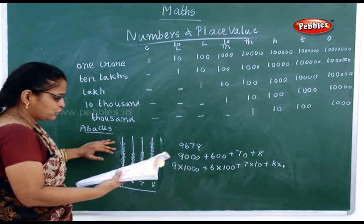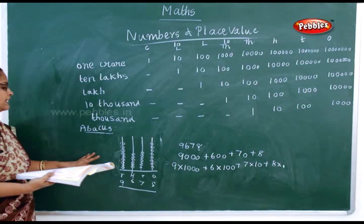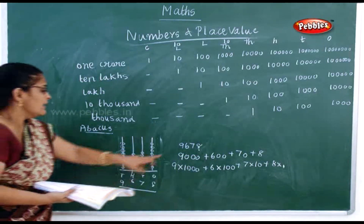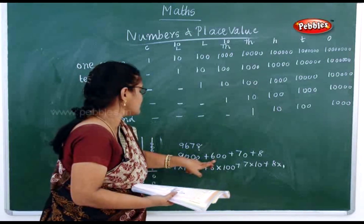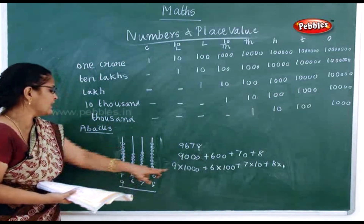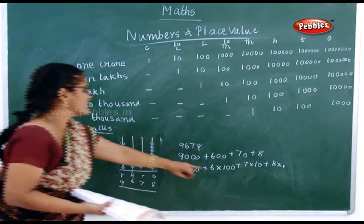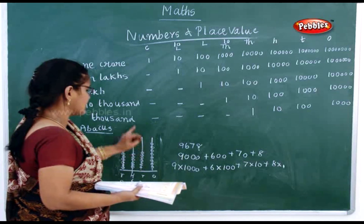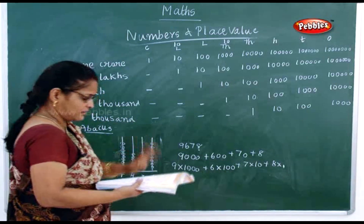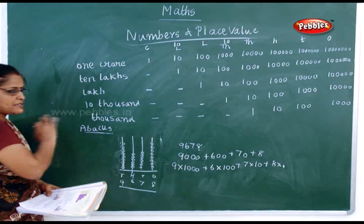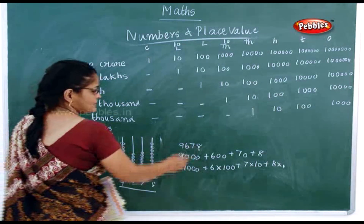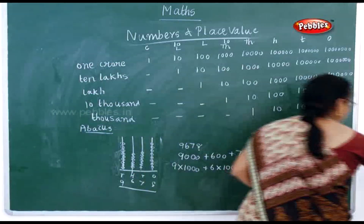Abacus form means when you write 9678 and expand it as 9000 + 600 + 70 + 8. So how many thousands? 9. How many hundreds? 6. How many tens? 7. How many ones? 8. This is how you represent it in the abacus. Now we will go on to ten thousands.